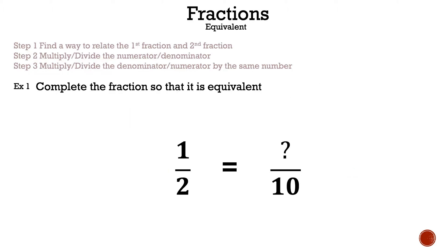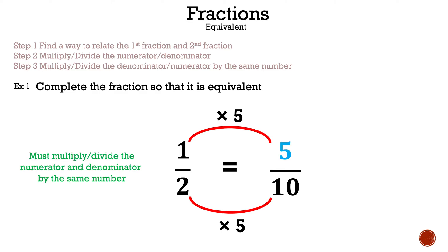Now let's take a look at it without the fractions and go through the steps. Step one: find a way to relate the first and second fraction. Step two: multiply or divide the numerator or denominator. Step three: multiply or divide the denominator or numerator by the same number. So let's read the question: complete the fraction so that it is equivalent. We have one-half equals something over ten. We relate the denominators — two times five gives me ten. Since we did that to the denominator, we do the same to the numerator: one times five gives me five. You must multiply or divide the numerator and denominator by the same number — that is the main key principle.